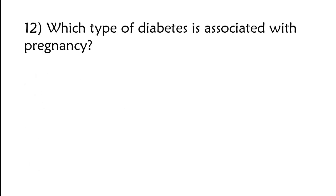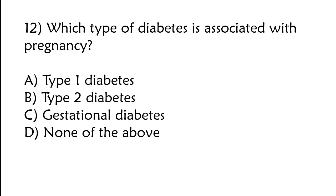Which type of diabetes is associated with pregnancy? Type 1 diabetes, type 2 diabetes, gestational diabetes, none of the above. The correct answer is option C, gestational diabetes.